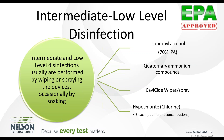When doing the disinfection validation, particularly in the U.S., you want to make sure the chemical is approved by the appropriate governing body. High level disinfectants are governed by the FDA, whereas low and intermediate level disinfectants are governed by the EPA. You would want to confirm your chemical appears on the appropriate approved list.